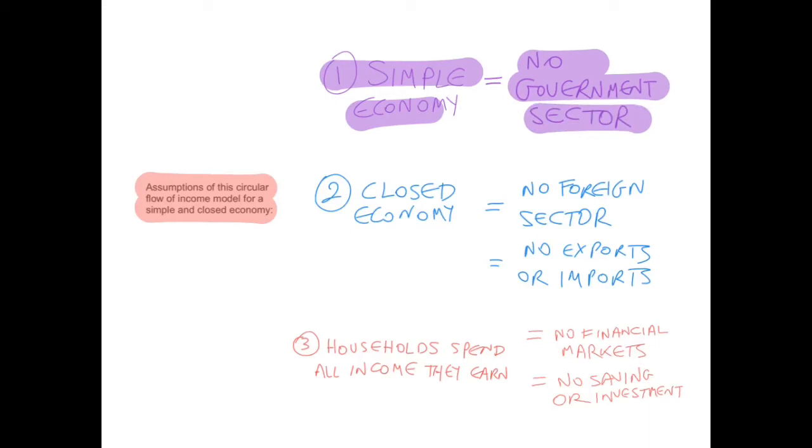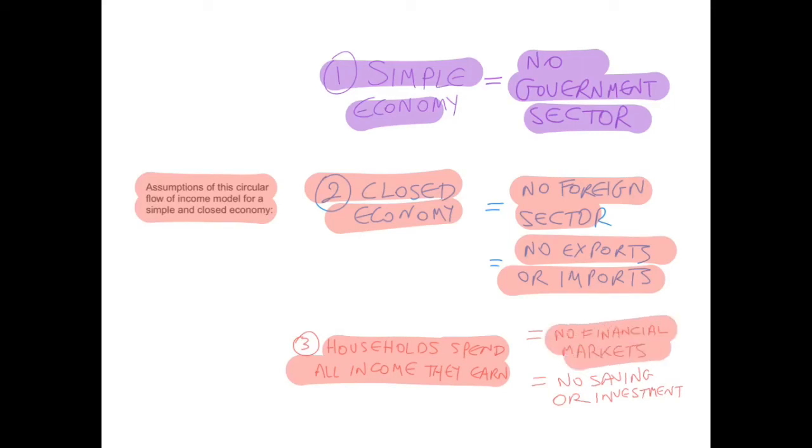The third assumption is that the households spend all the income they earn. We assume that there are no financial markets, no saving or investment. This is an overly simple model of how an economy works.